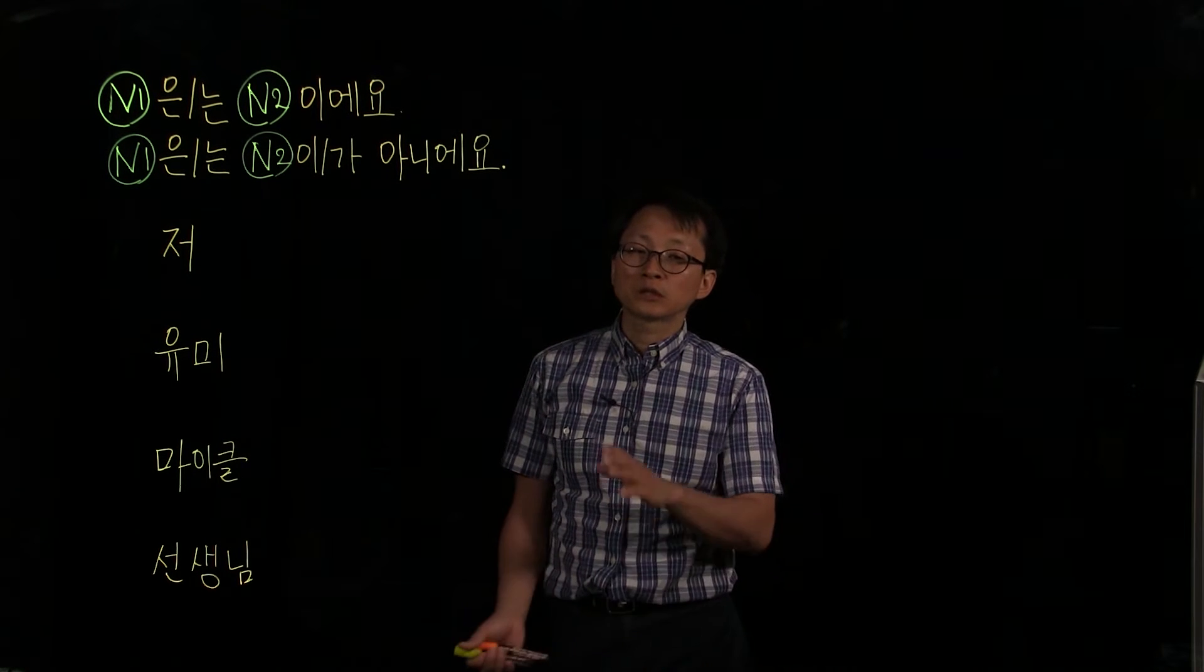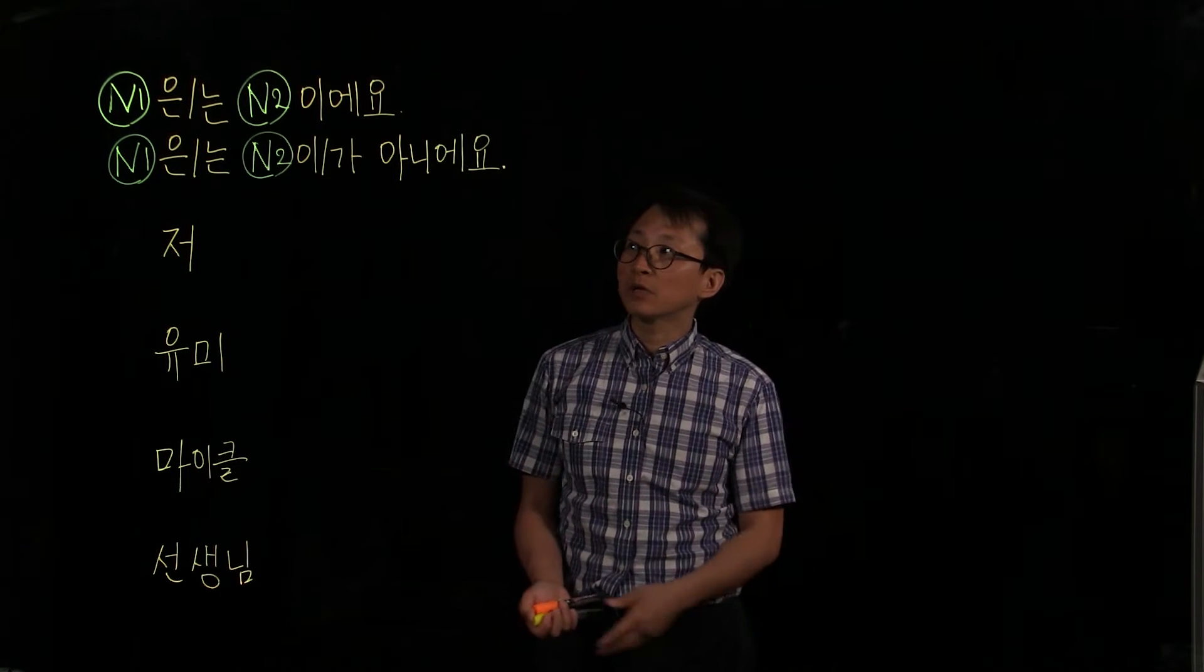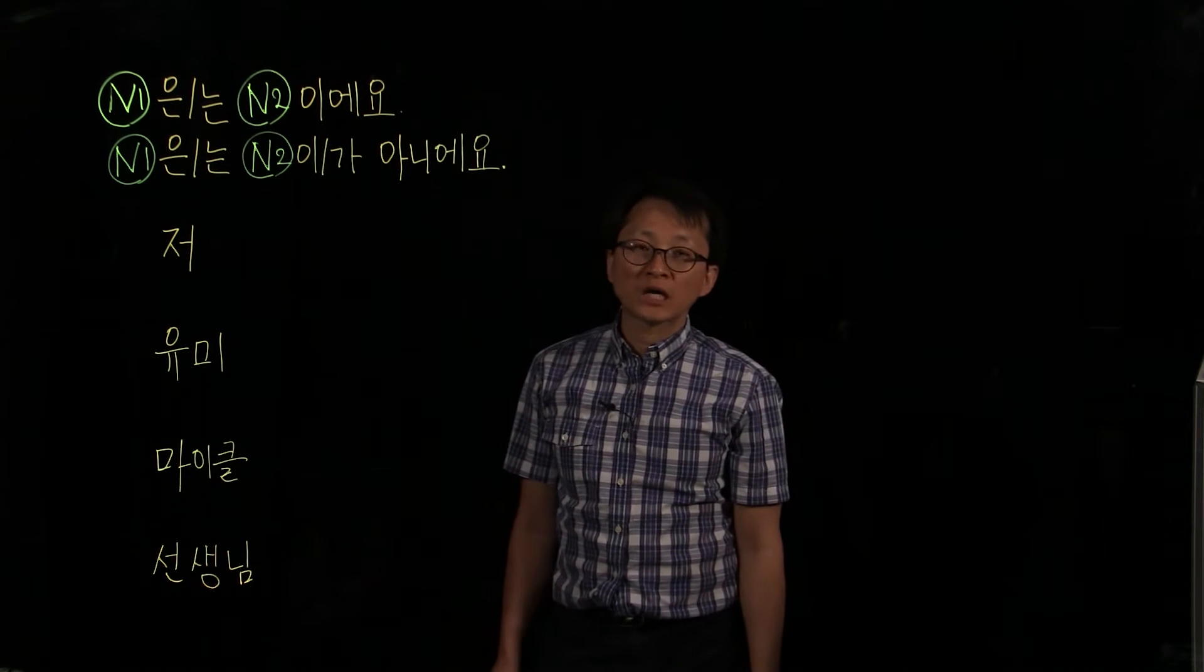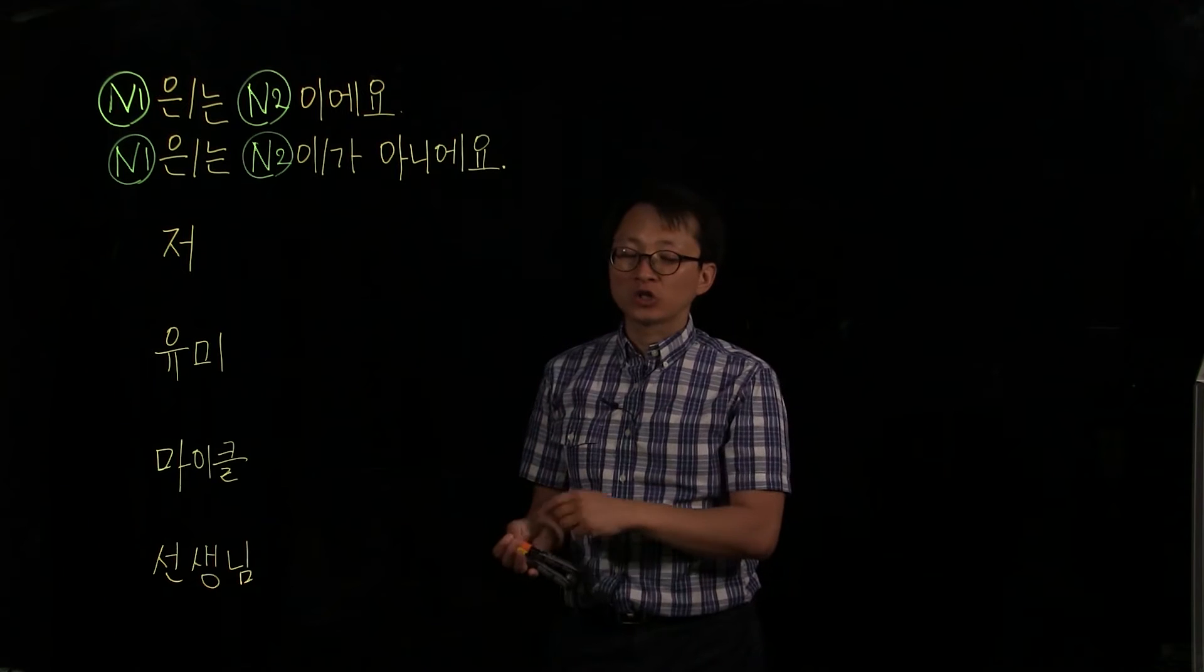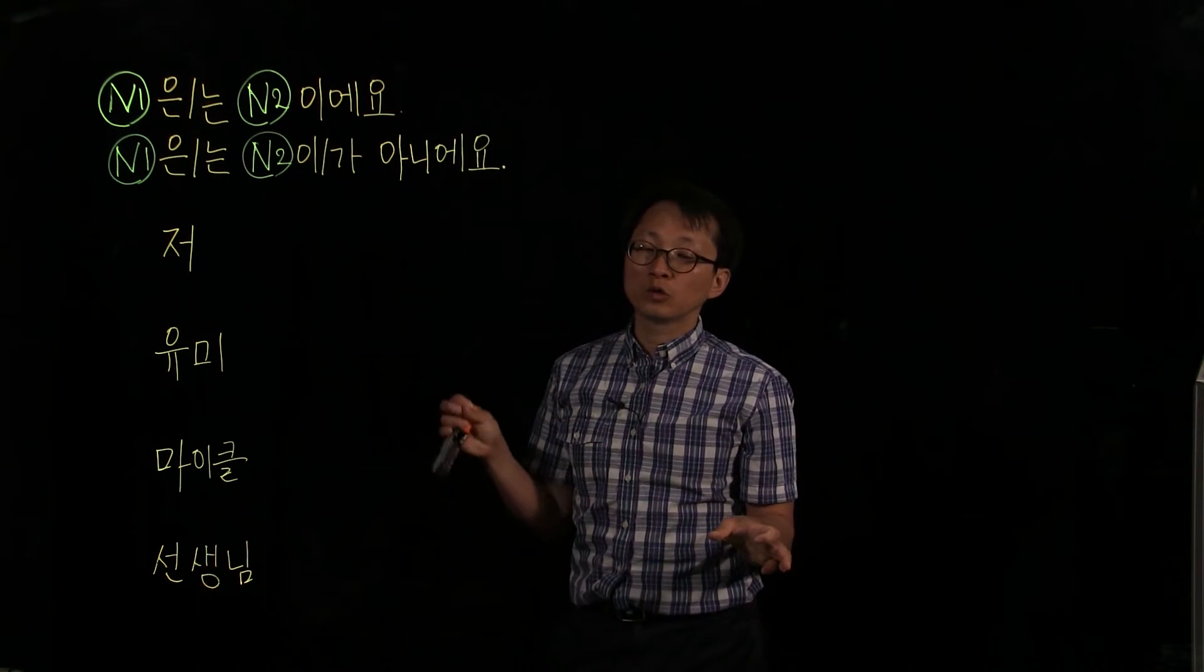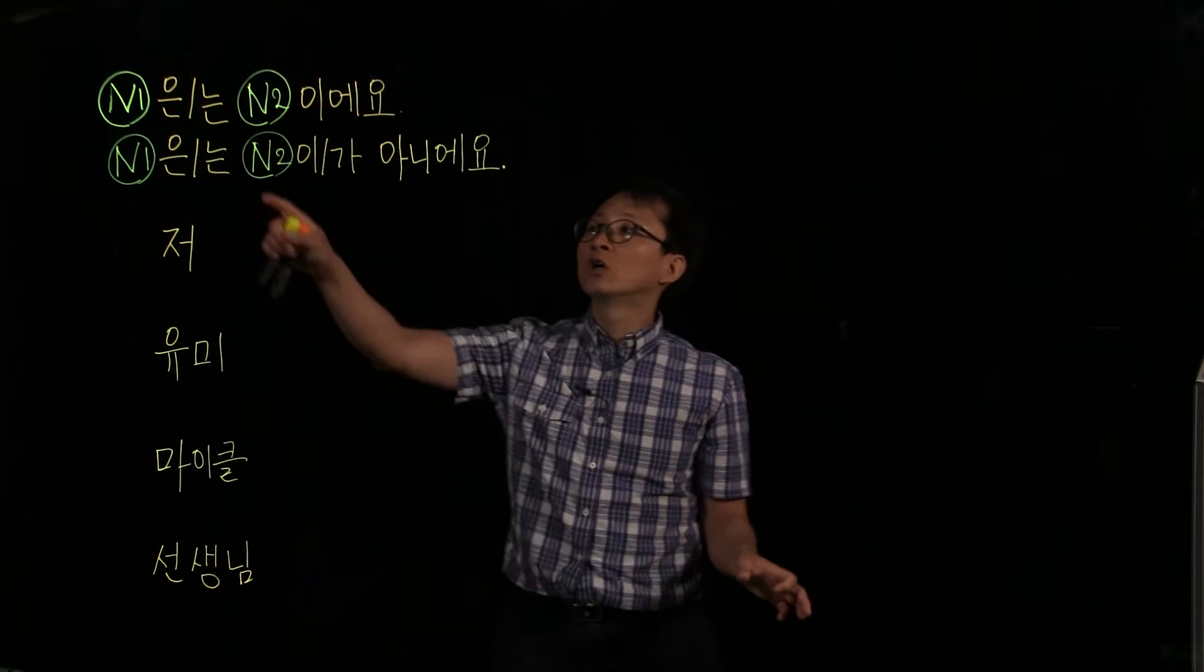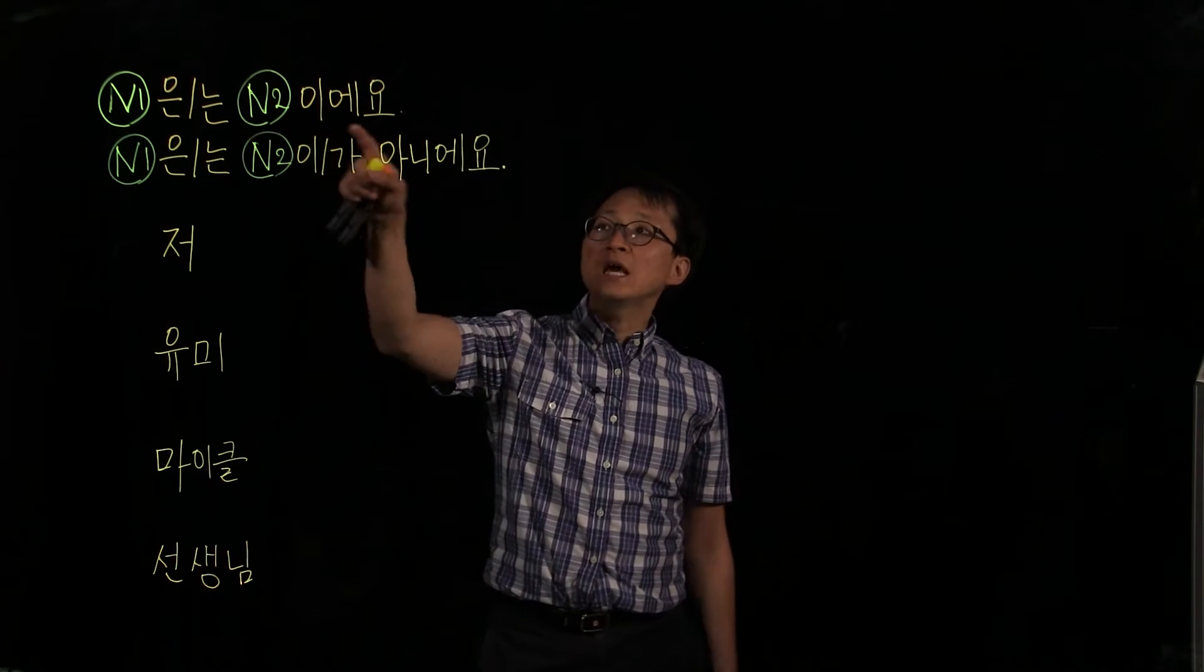How to say somebody is, or something is, something like that. So 저는 한국 사람이에요. Do you remember that? So I, 저, 한국 사람, Korean person. So when you want to say I am a Korean person, you can say 저는 한국 사람이에요, right?